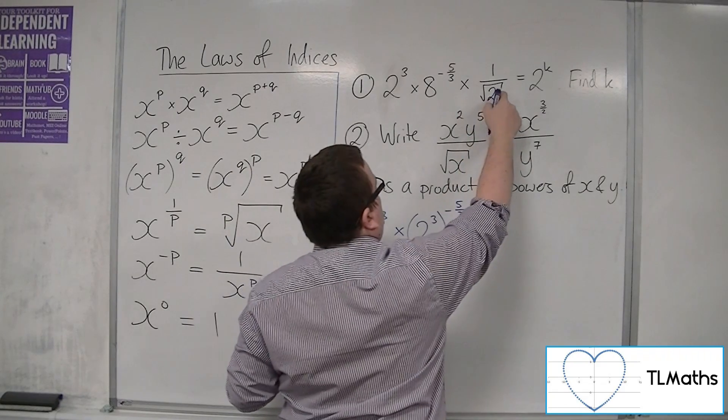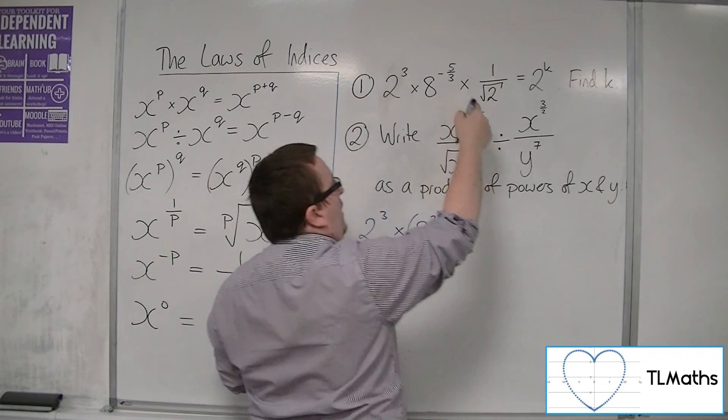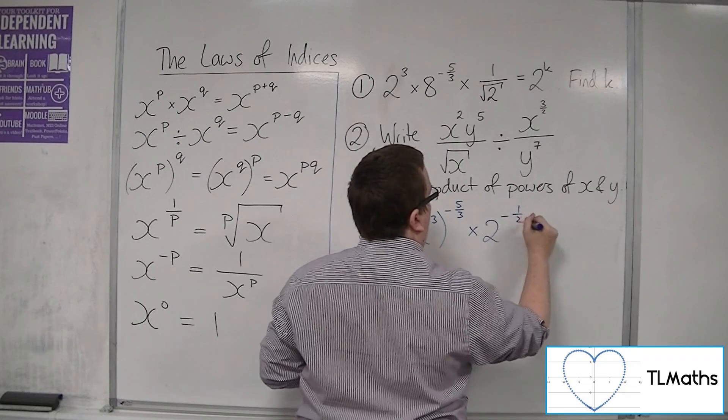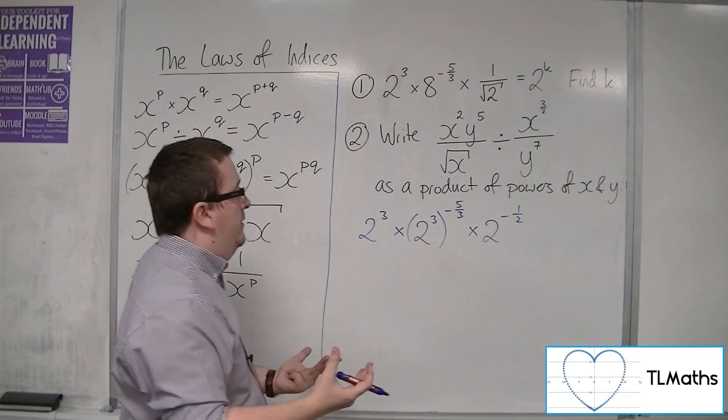And the 2 here, well, the square root of 2 is 2 to the half. 1 over that is 2 to the minus 1 half. So I've written everything as 2 to the power of something to start off with.